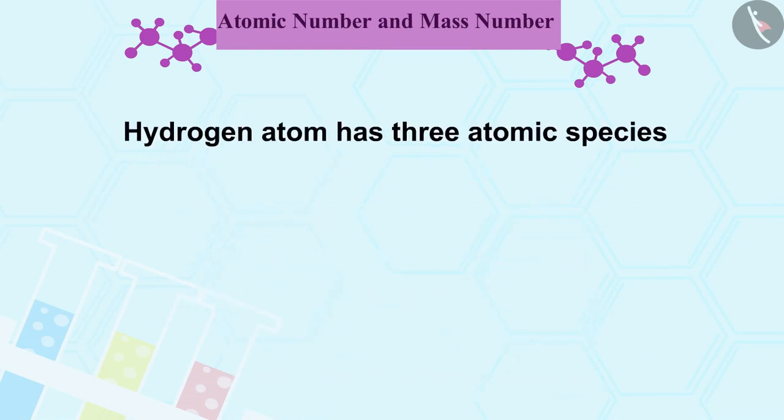For example, take the case of hydrogen atom. It has three atomic species: Proteum, deuterium, tritium. They all have the same atomic number but the mass numbers are 1, 2 and 3 respectively.